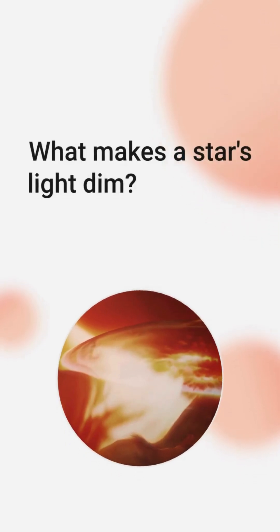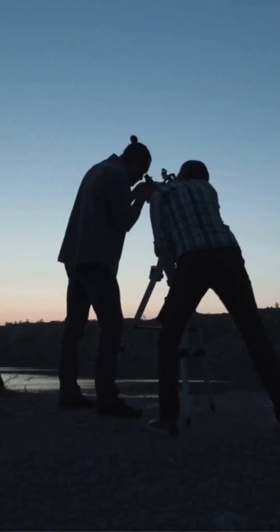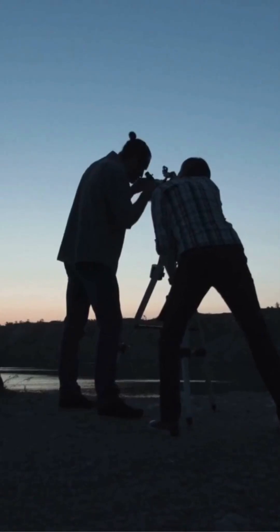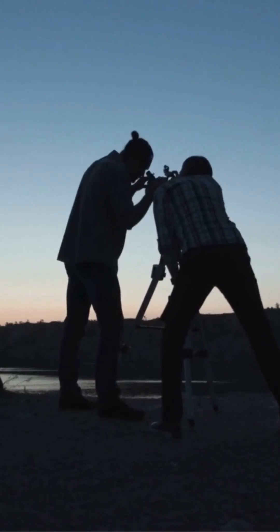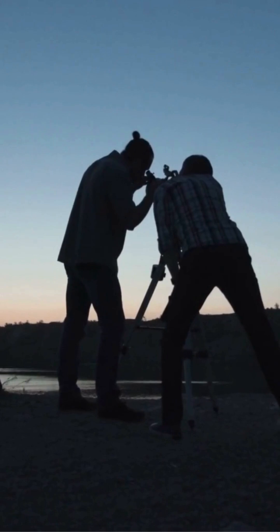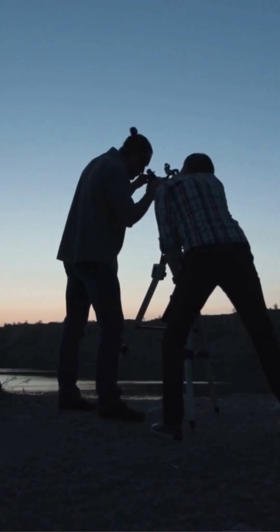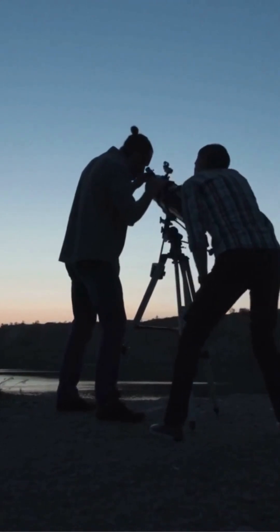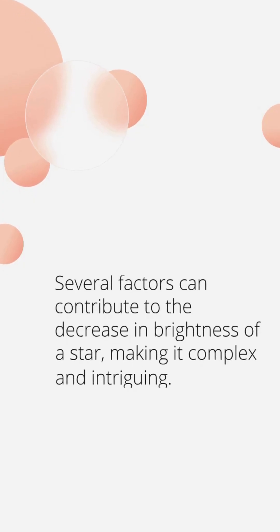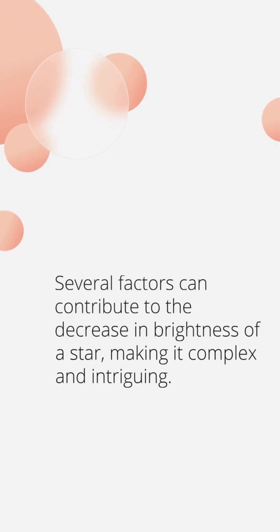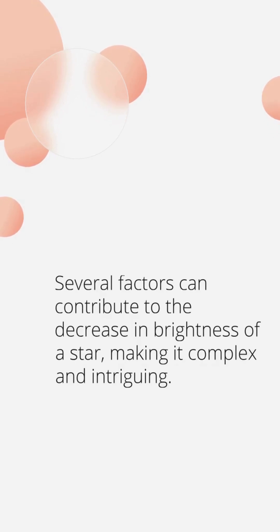What makes a star's light dim? The dimming of a star's light is a phenomenon that has fascinated astronomers and scientists for centuries. There are several factors that can contribute to the decrease in brightness of a star, making it a complex and intriguing topic.